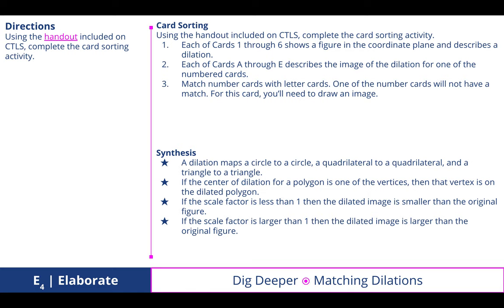Digging deeper, we used a card sorting activity to compare different dilations with various scale factors. To synthesize: a dilation maps a circle to a circle, a quadrilateral to a quadrilateral, and a triangle to a triangle. If the center of dilation is one of the vertices, then that vertex is on the dilated polygon. If the scale factor is less than 1, the dilated image is smaller than the original figure. If the scale factor is larger than 1, the dilated image is larger. We keep reemphasizing these things in different ways to help strengthen conceptual understanding.